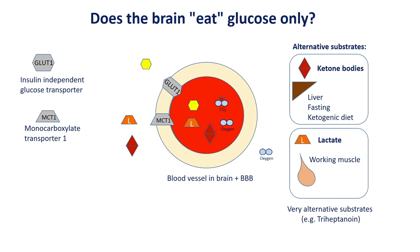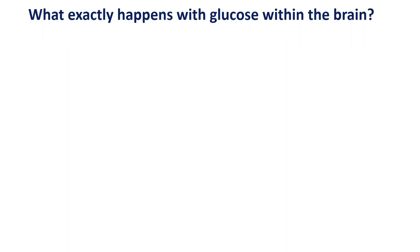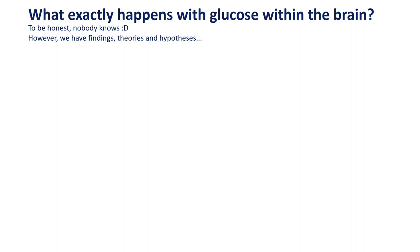Among them, the one most interesting metabolically is called triheptanoin. Coming to our final slide, we try to illustrate what exactly happens with glucose within the brain. To be honest, literally nobody knows exactly. However, we have findings, theories, and hypotheses.